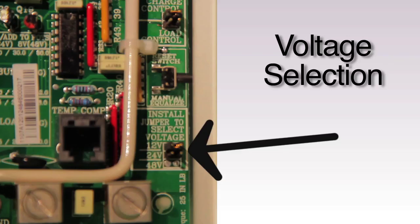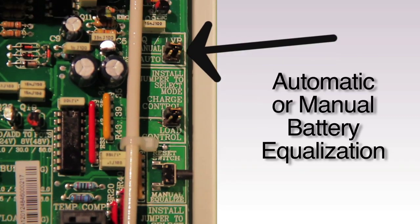The bottom jumper is to select the voltage you're working with. We'll select 12. The upper jumper changes depending on which mode you're using your controller for. Again, we're using ours in the charge control mode, so this jumper changes it from automatic or manual battery equalization. The factory setting is manual, and we'll keep it there.